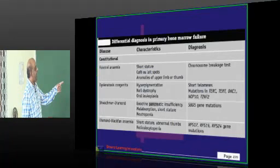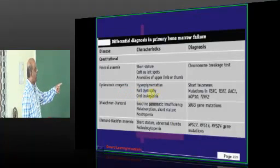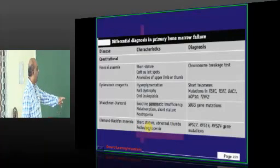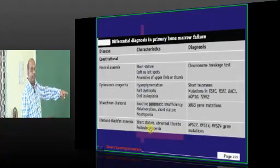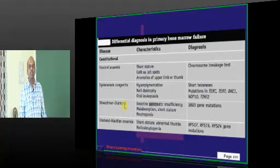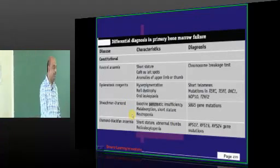Fanconi means short stature, café-au-lait spots, anomalies of upper limb and thumb. Dyskeratosis congenita means hyperpigmentation, nail dystrophy. Diamond-Blackfan means — your favorite — short stature, abnormal thumb, reticulocytopenia. And Schwachman-Diamond means exocrine pancreatic insufficiency, malabsorption, short stature. Schwachman-Diamond. You put it in 50-50 dustbin, no?